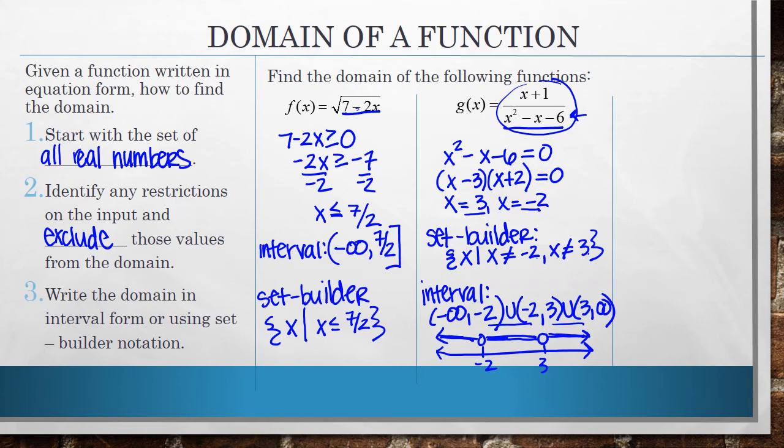For this one, it's from negative infinity to negative 2, negative 2 to 3, and 3 to infinity. So if it's easier, you can go ahead and write things out like that. Okay, the last example is p of x equals 3x squared minus 4x plus 2. Looking at this, we'll start out with the set of all real numbers. And then I have to see if there's any restrictions.